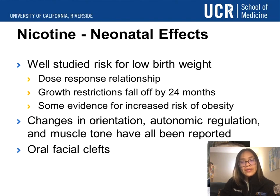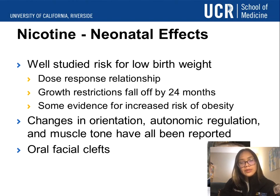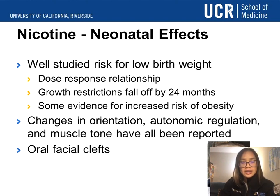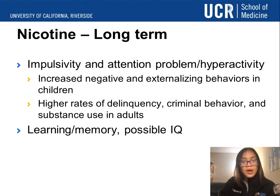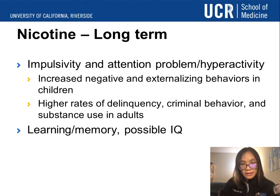For nicotine, we know there are associations with low birth weight in a dose-dependent relationship — higher doses of nicotine result in lower birth weight. The growth restrictions seem to fall off by two years of age, and there is also some data for increased risk of obesity in children. We know there can be changes in orientation, autonomic regulation, and muscle tone, and they are also commonly found to have oral-facial clefts. There can be impulsivity and attention problems including hyperactivity, increased negative and externalizing behaviors, and as they get older, higher rates of delinquency, criminal behavior, and substance use as adults. There are also cases of learning and memory issues and possible lower IQ.